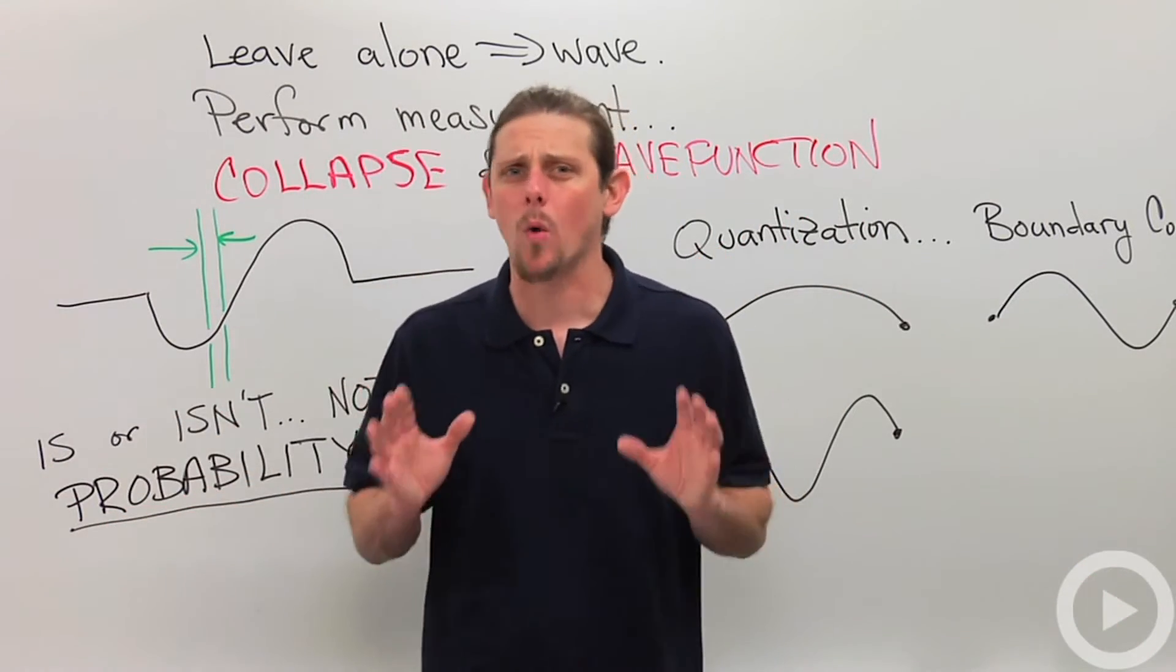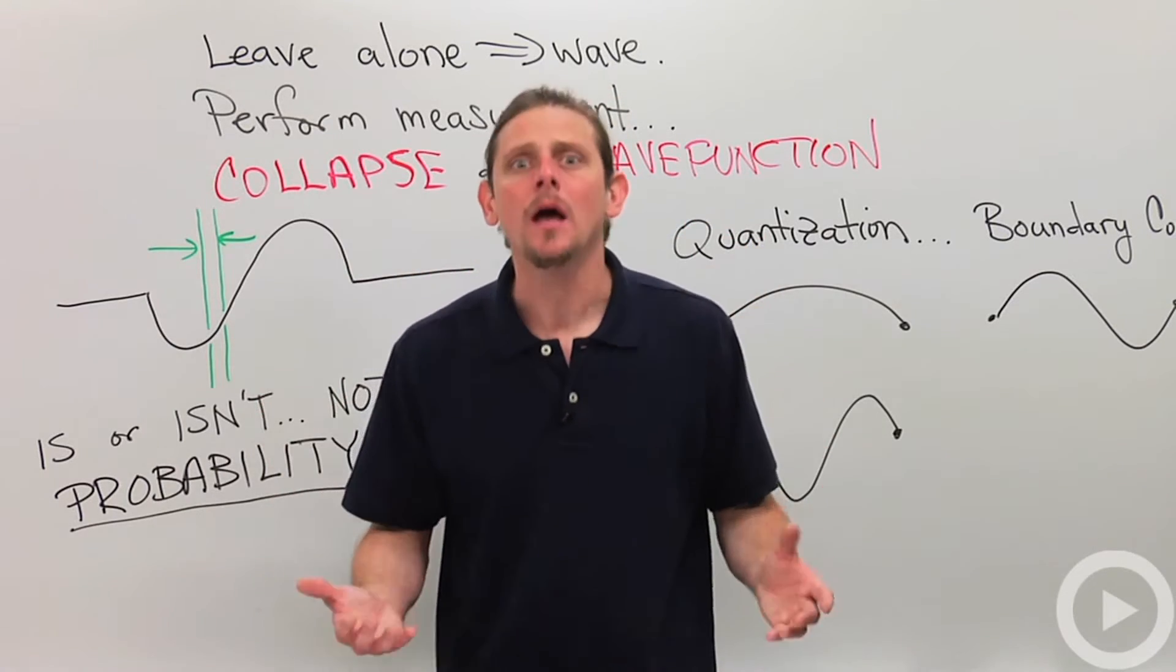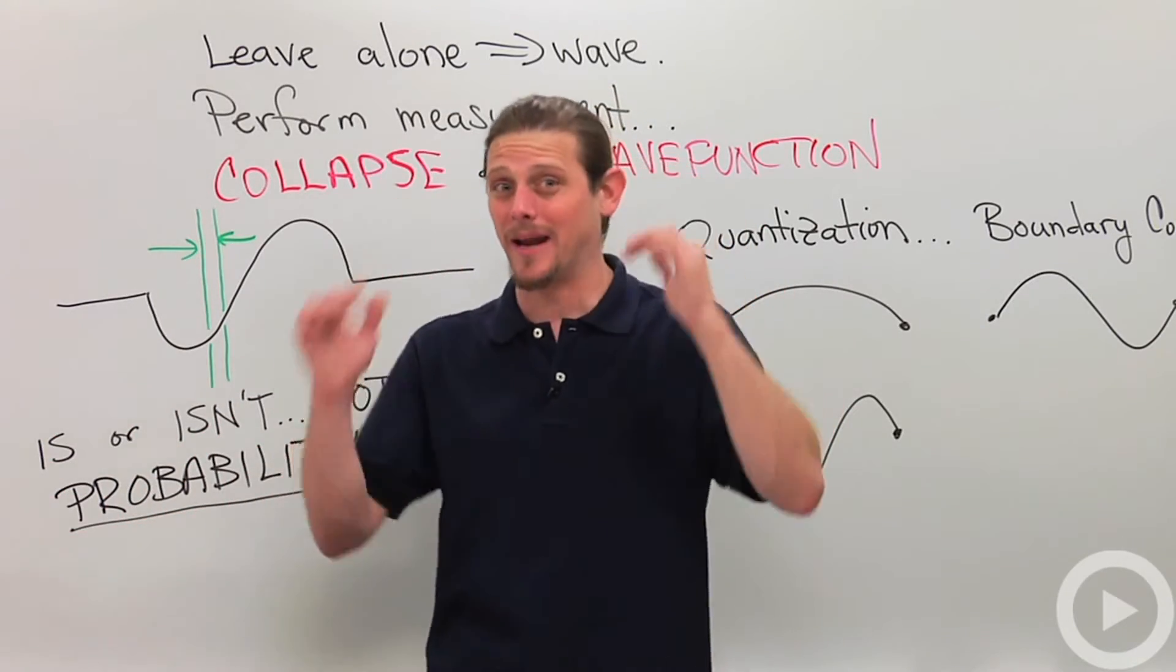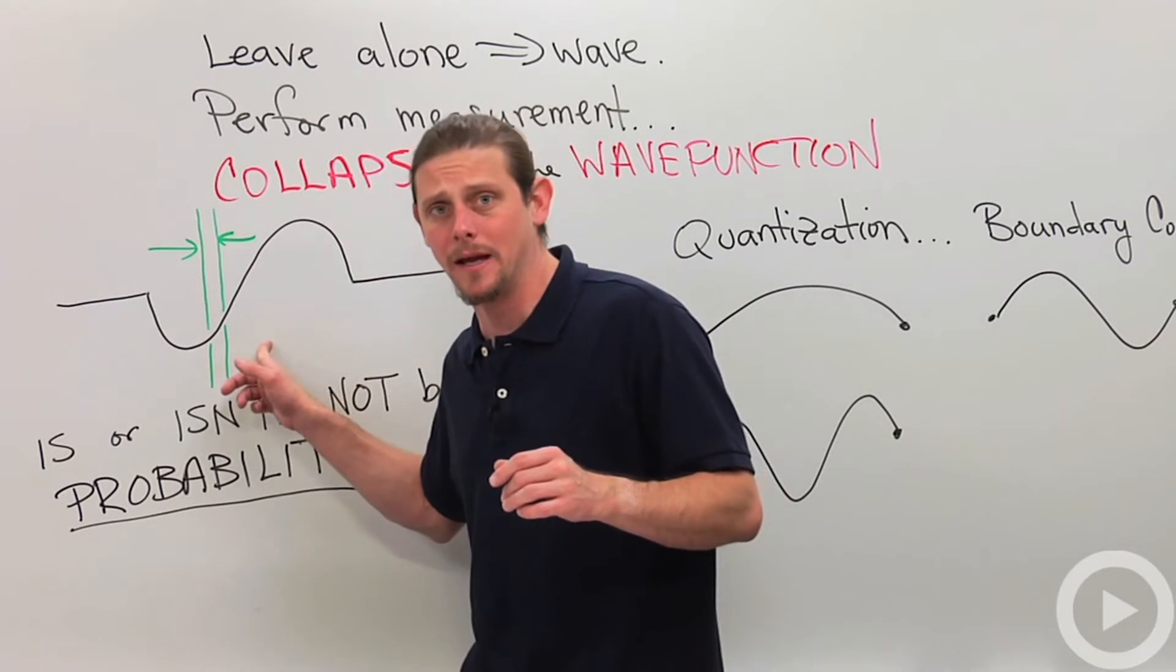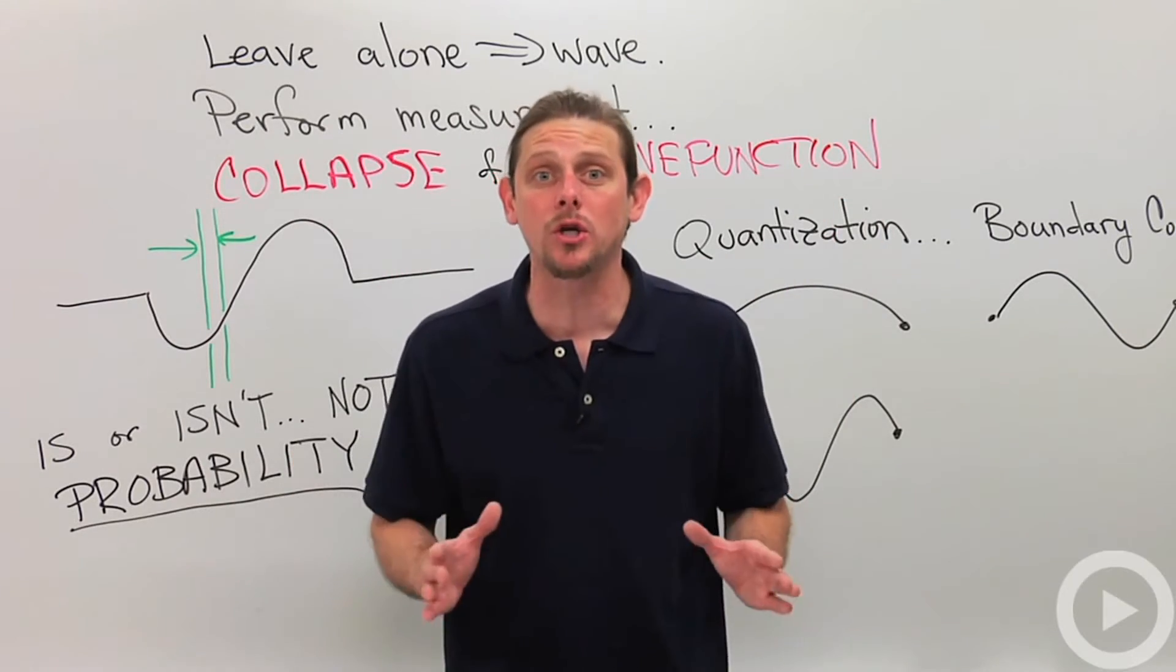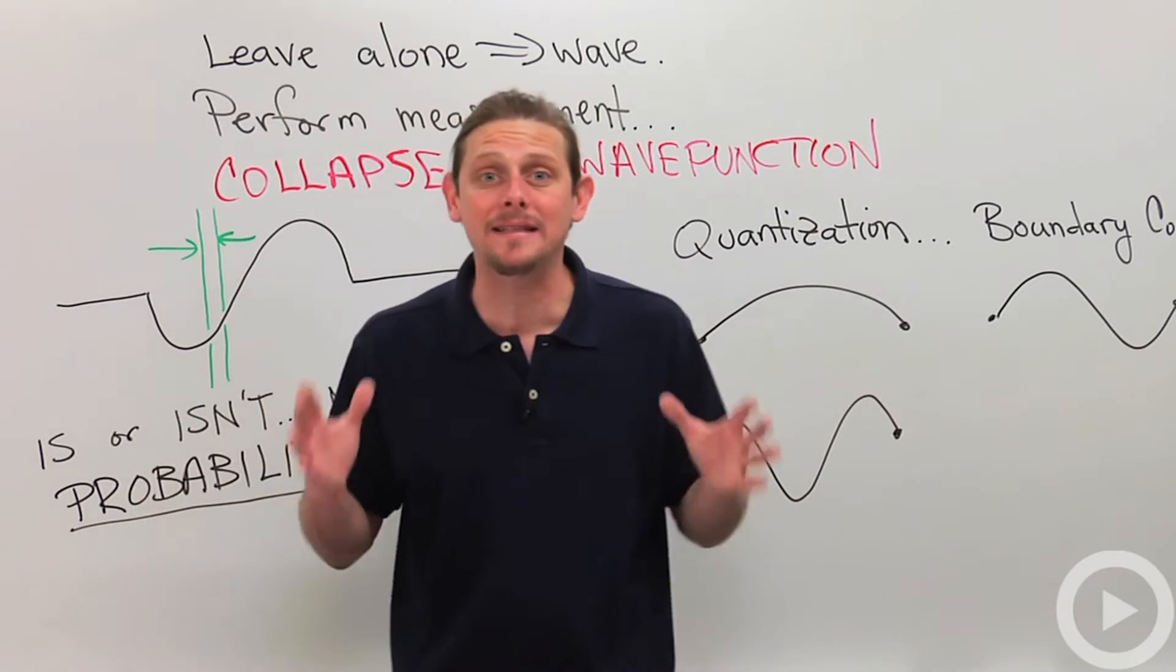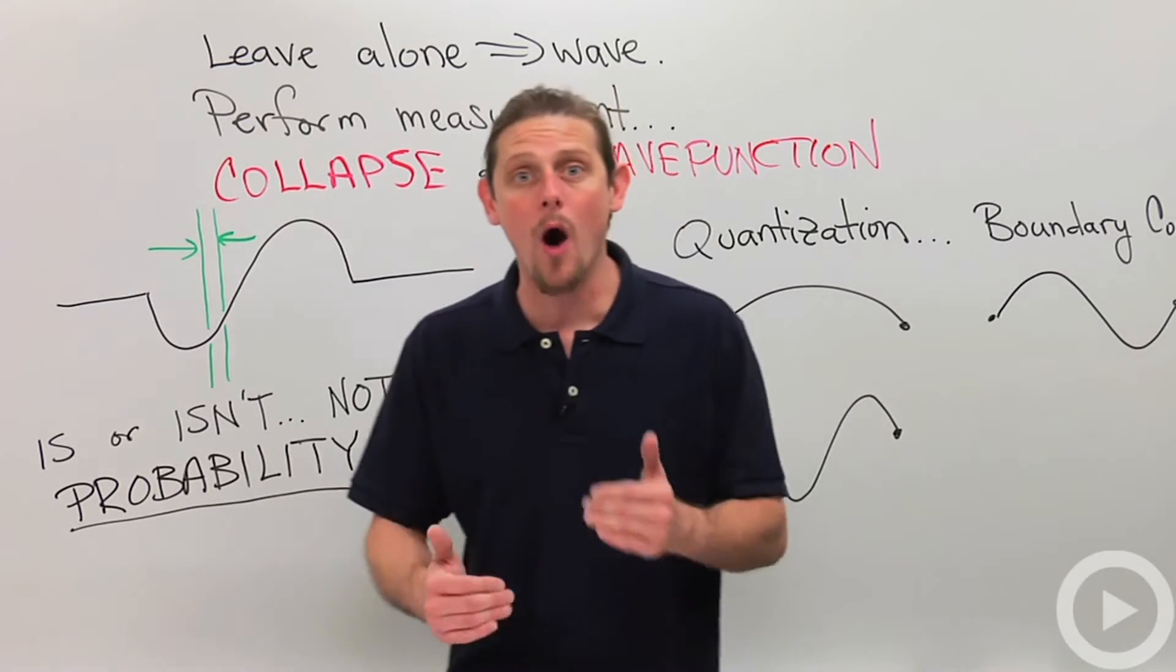And so that's the weird part about quantum mechanics that makes people kind of fuzzy on it, is that sometimes if you leave the system alone, it behaves like a wave, and you can kind of think about it as partly being in between the green lines and partly being not. But if you do that measurement, and you try to determine is it or is it not, then the answer is given probabilistically. You can't say before you do the experiment for sure how it will come out.